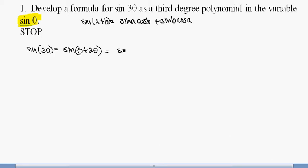So I have sine of theta cosine of 2 theta plus sine of 2 theta cosine of theta.